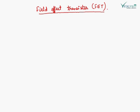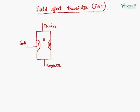Now we will see the basic construction of JFET. FET is a three-terminal device: gate, drain, and source. There is also a fourth terminal which is known as substrate.